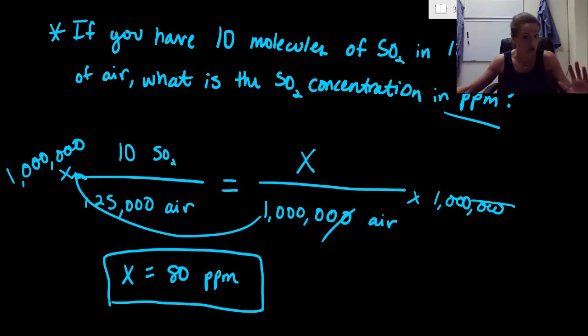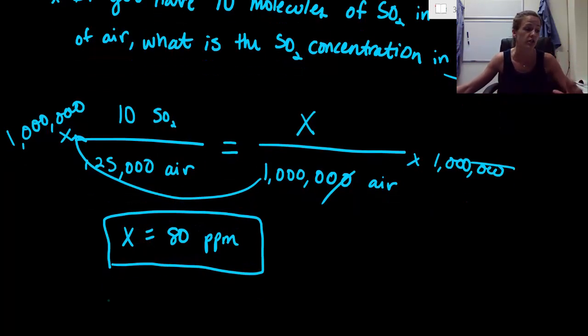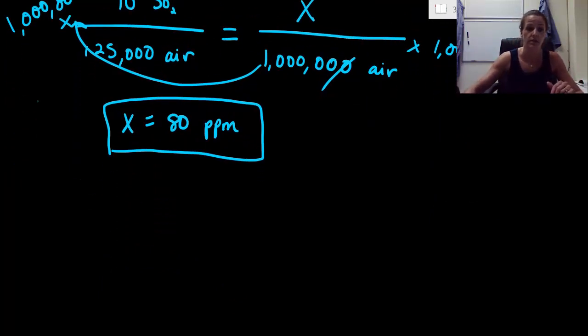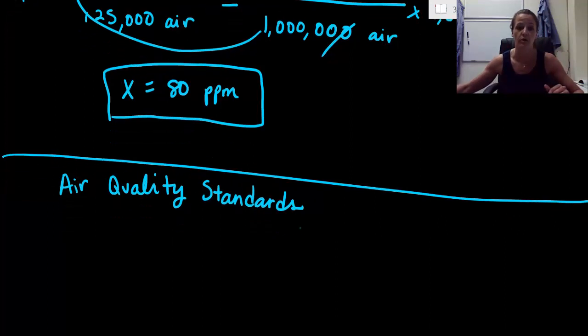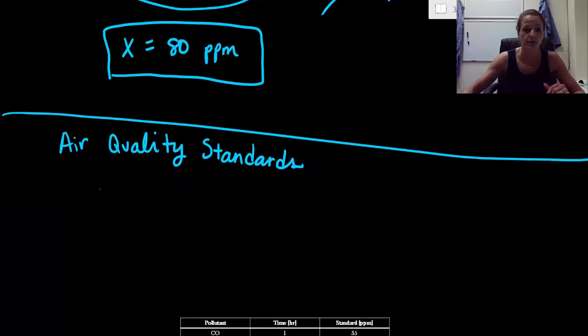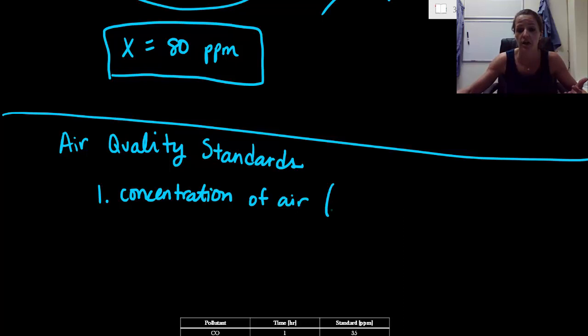So now that we're all good here, and we understand how to do our units of concentration, let's talk about this in terms of quality of air standards. So this is going to be air quality standards. Now, our standards depend on three very important factors. Our first one has to do with our concentration of air. How much of each component is there? So this is where we're talking about things in terms of percent, or ppm, or maybe even ppb. How much of our pollutant is sitting in that pocket of air that we're analyzing?